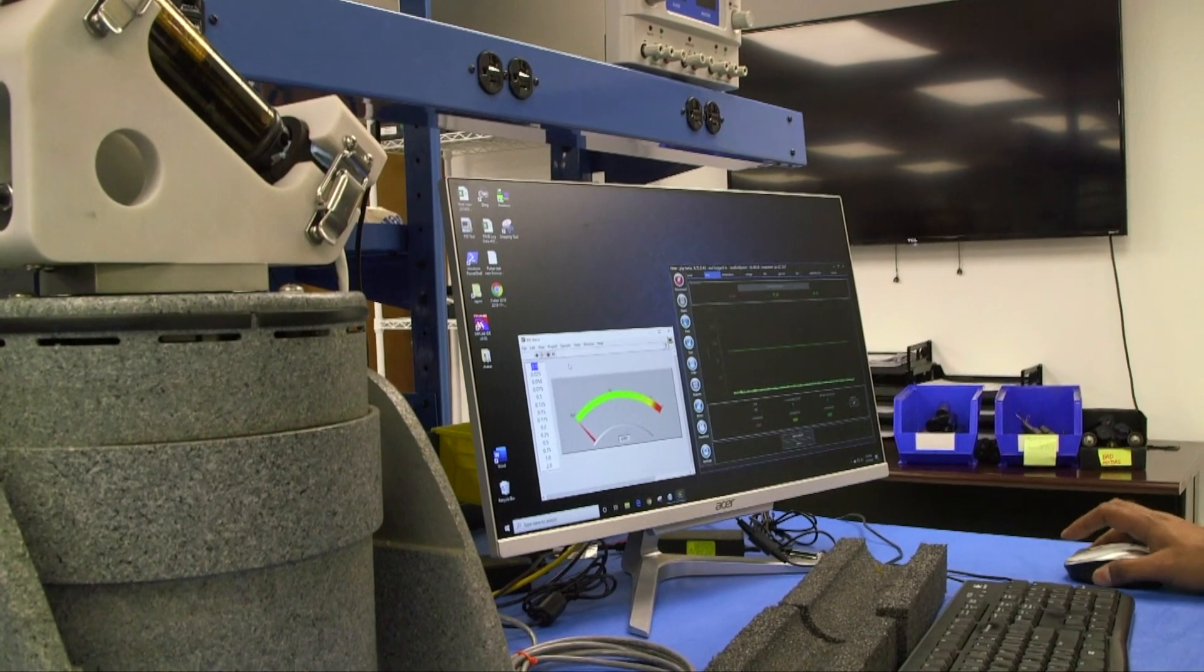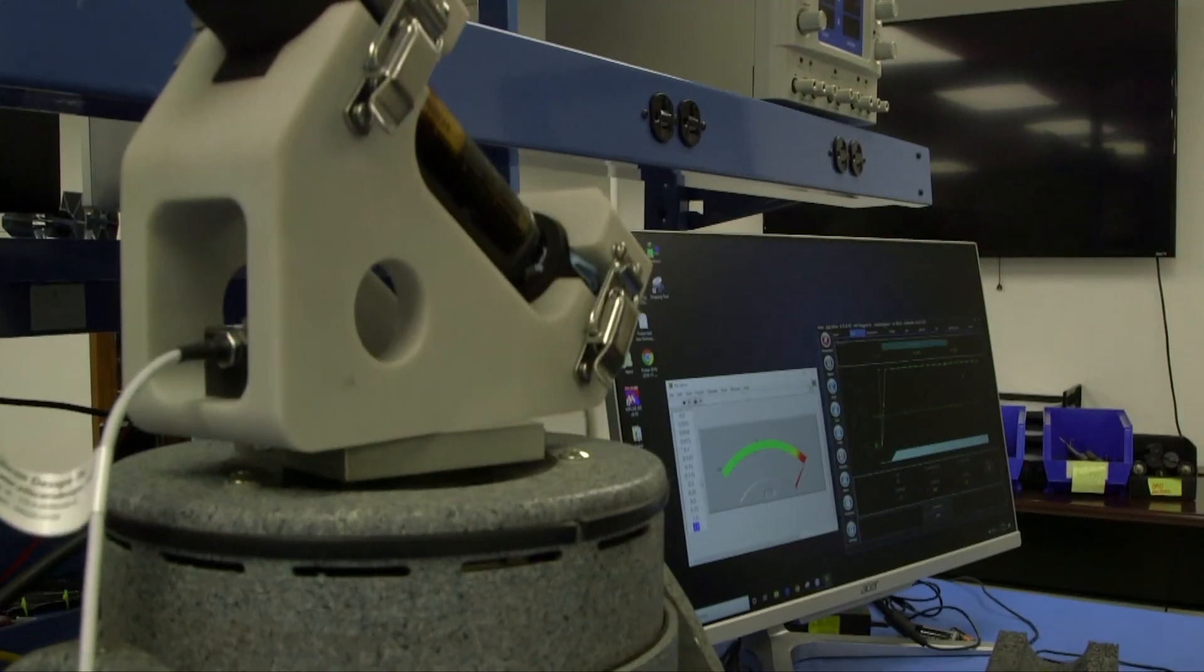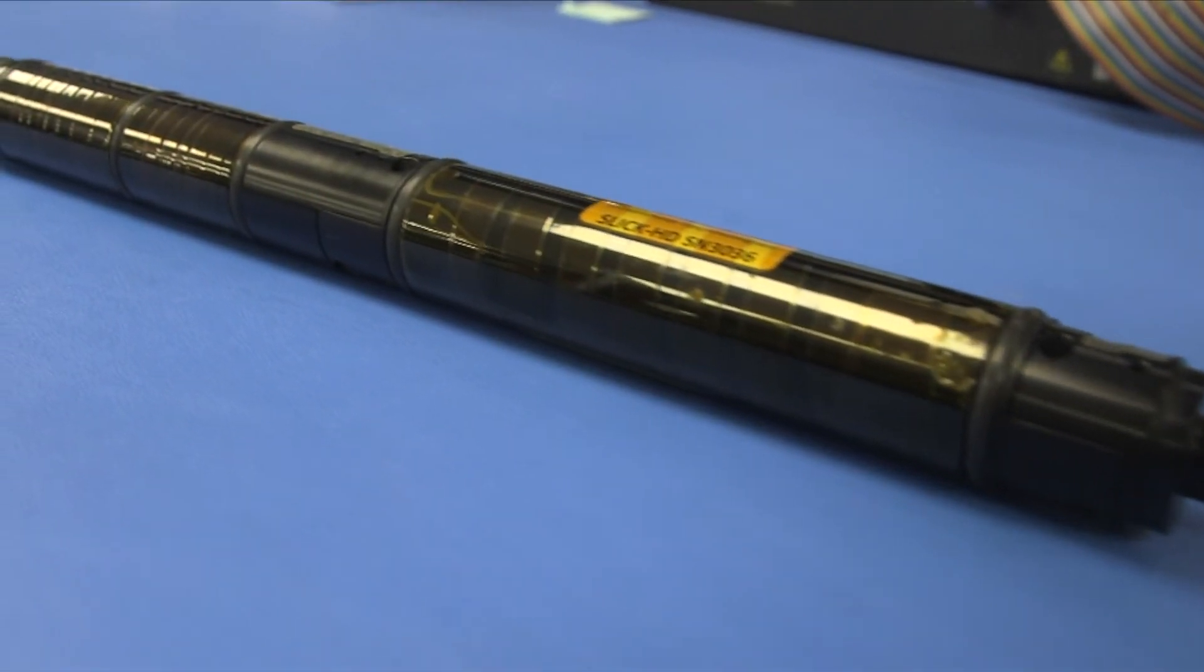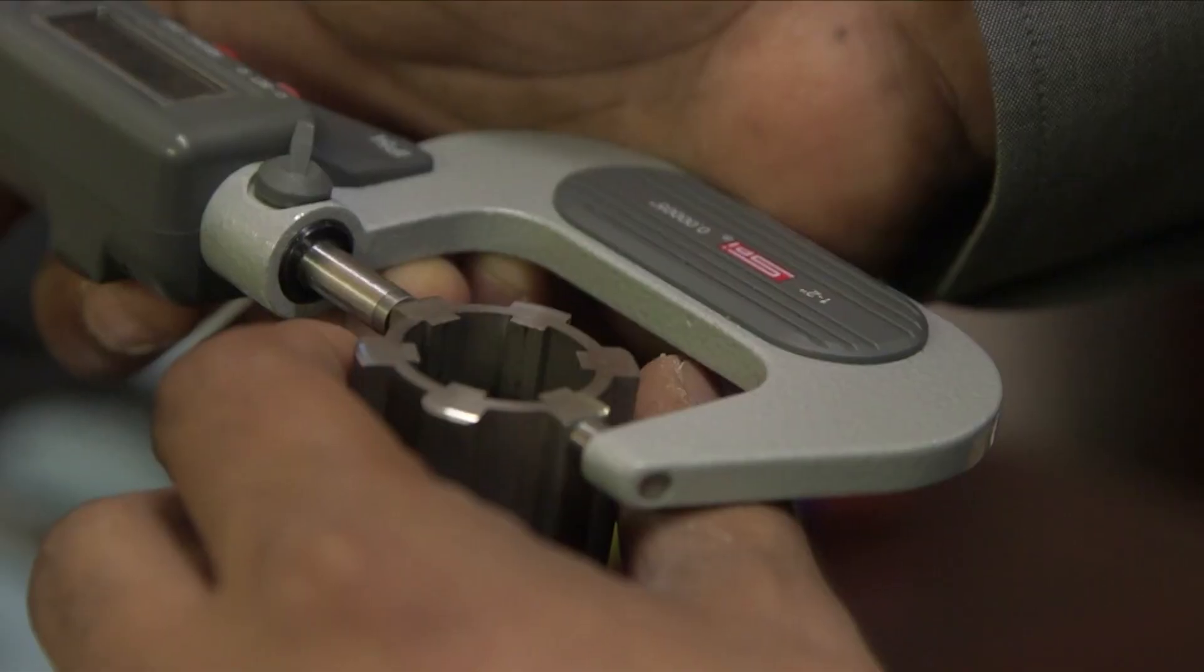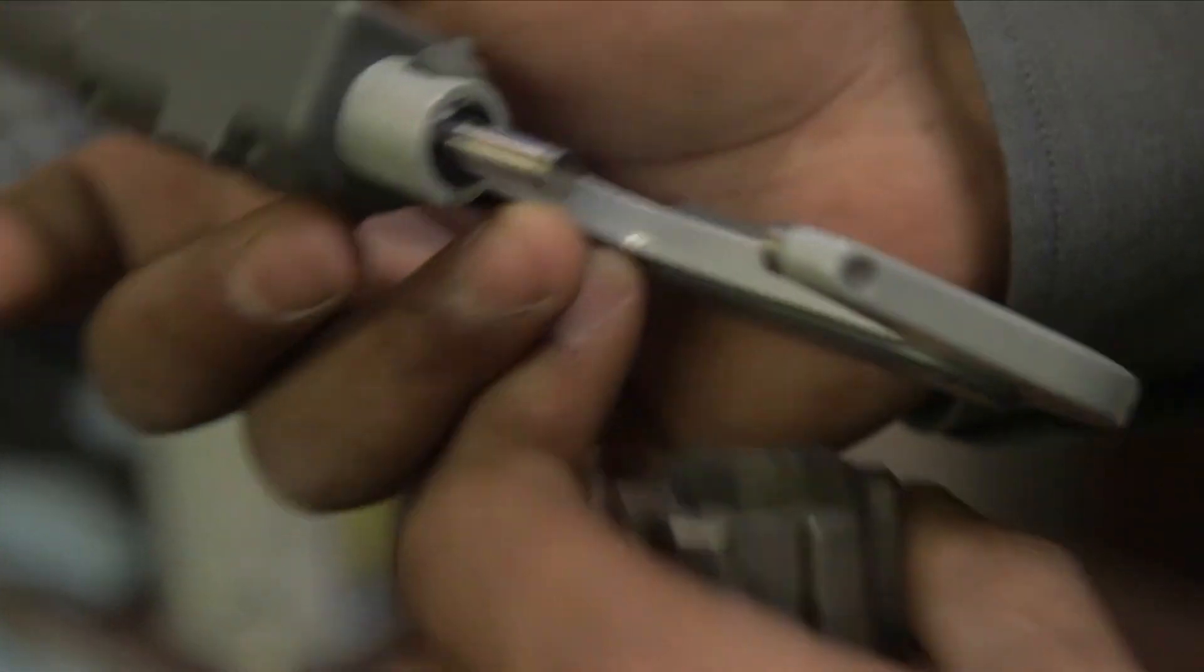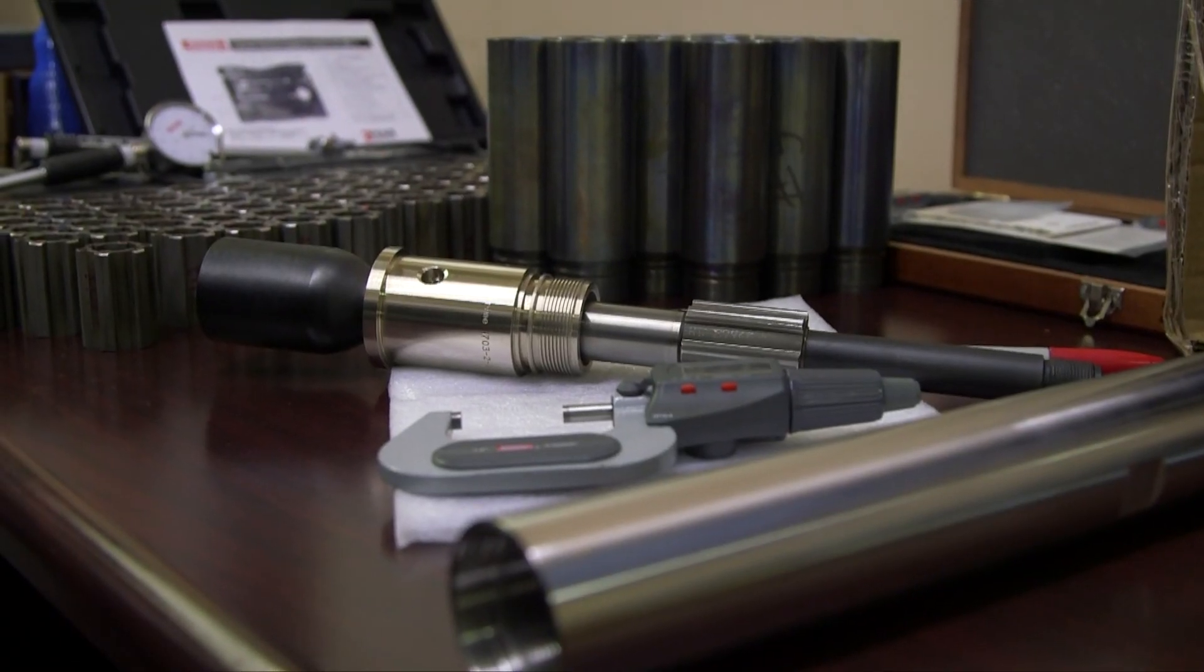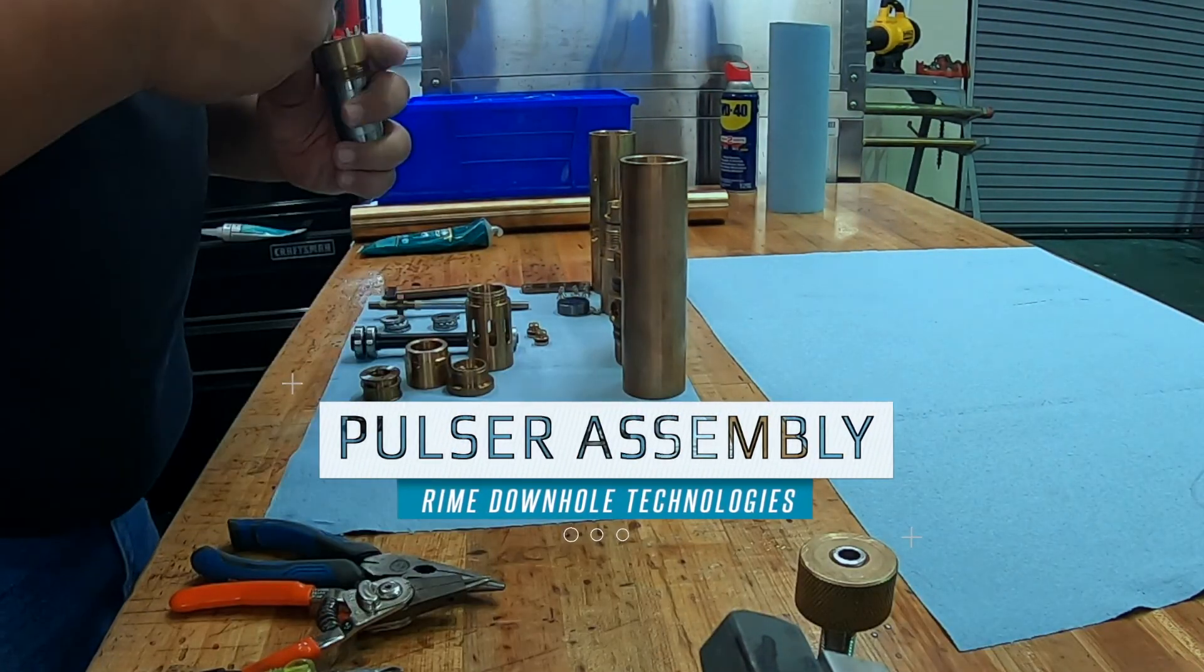The electronics is then tested for the sensitivity and behavior of the flow switch using our electrodynamic shaker. The electronics, the motor and gearbox and the harnesses are then assembled to finish the electronic section of one of our pulsers. Most of the mechanical parts of RIME downhole products are custom engineered but also manufactured specifically by us. And these products are again thoroughly quality control checked before usage in any downhole product.